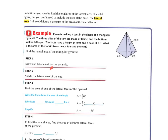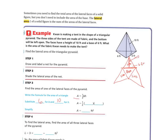We're going to find the lateral area of the triangular pyramid. First, draw and label a net for the pyramid. The base is in the center and the lateral faces are the sides. The height on each triangular face is 10 feet, and the base of each triangle is 6 feet. The formula is area equals one-half base times height, because a triangle is half of a rectangle.